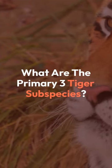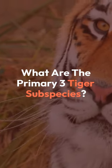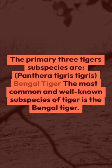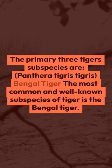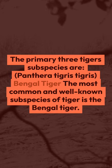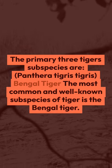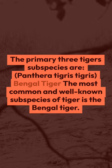What are the primary three tiger subspecies? The primary three tiger subspecies are Panthera tigris tigris, the Bengal tiger. The most common and well-known subspecies of tiger is the Bengal tiger.